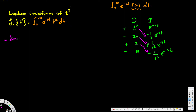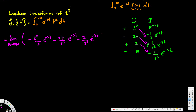Since this is an improper integral, we write the integration with a limit as n approaches infinity. The result is: negative t squared over s times e to the negative st, then minus 2t over s squared times e to the negative st, then minus 2 over s cubed times e to the negative st, evaluated from 0 to n.